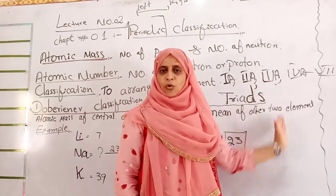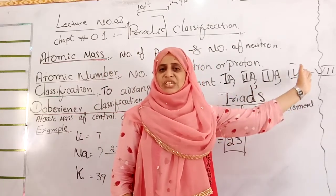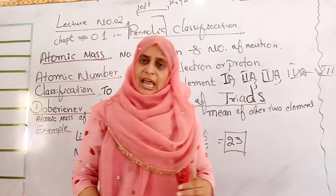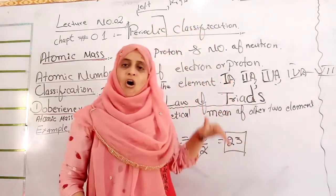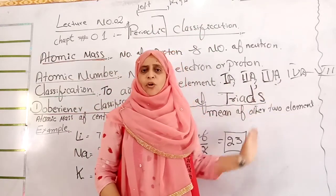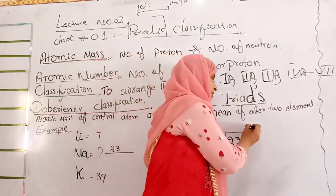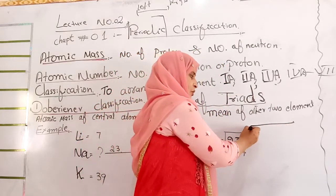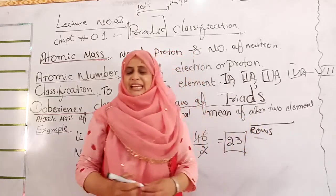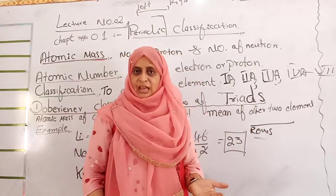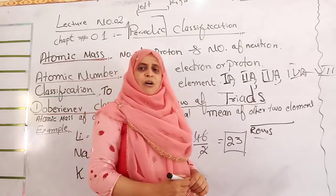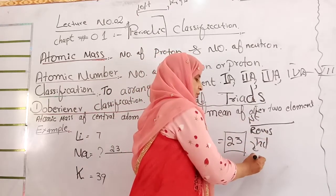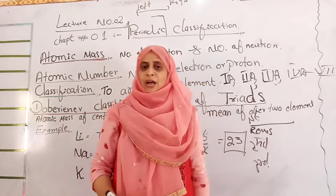Groups are formed: first group, second group, third group, fourth group, fifth group, sixth group, seventh group, and also eighth group. While elements are arranged in horizontal rows — left to right — which are called rows. Rows basically indicate the period. How many elements are found in the first period, then the second period, then the third period — that is how rows are formed.